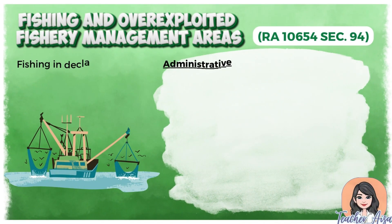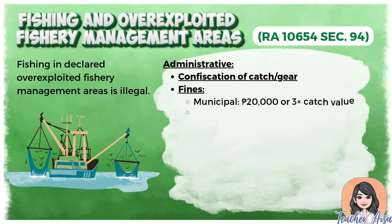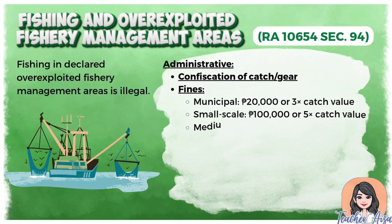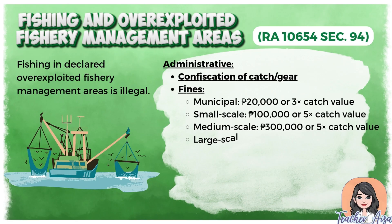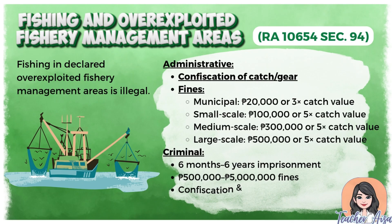Under RA 10654 Section 94, fishing in overexploited areas is prohibited. Violators face administrative penalties including confiscation of catch and gear and fines based on catch value or fixed amounts, and criminal penalties such as 6 months to 6 years imprisonment, fines up to 5 million pesos, and cancellation of fishing permits.